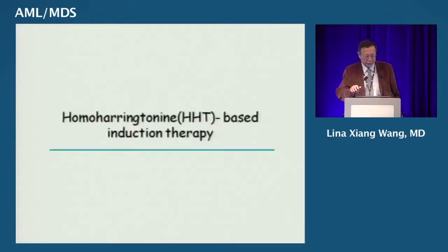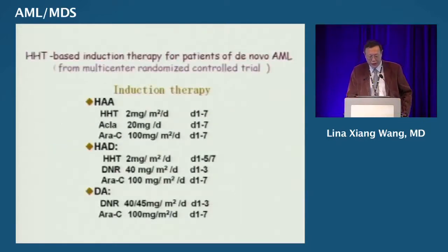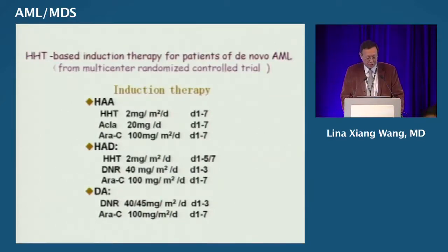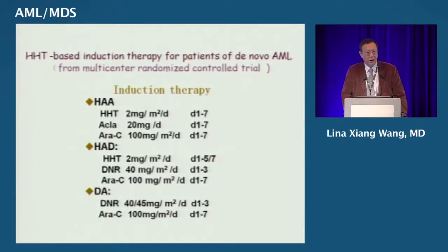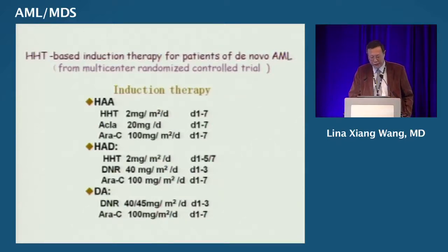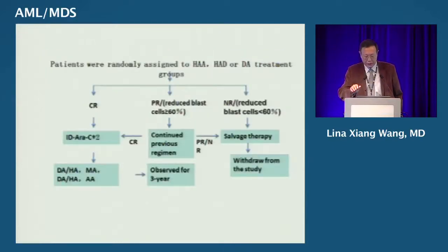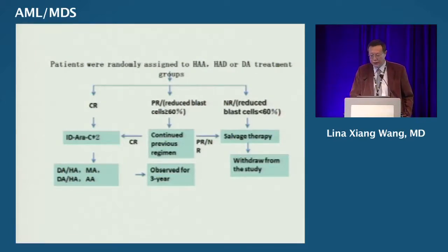This is a recent achievement for homoharringtonine-based induction therapy — a multi-center trial from China. Patients were randomized to three induction regimens: HA (homoharringtonine, cytarabine, and aclarubicin), HAD (homoharringtonine, daunorubicin, and cytarabine), or the conventional standard-dose DA regimen (daunorubicin and cytarabine). Patients were randomized to these three different induction regimens.